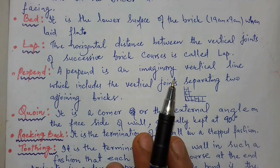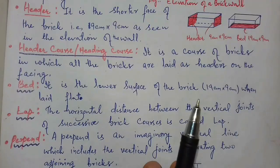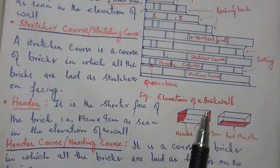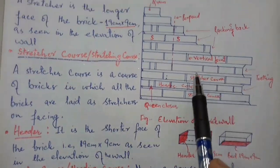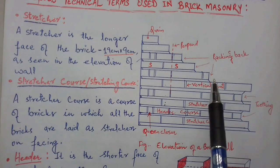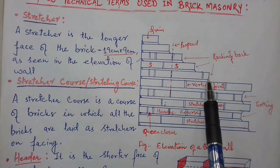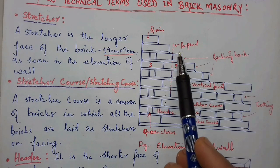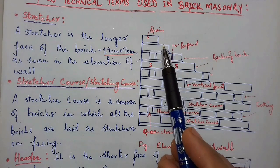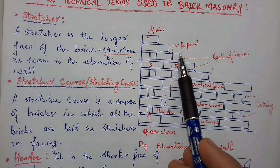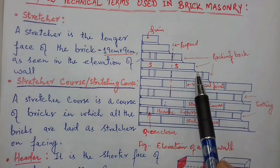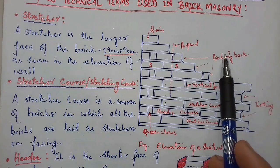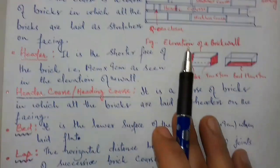Another term is raking back. It is the termination of a wall in a step position. As you can see, this termination of the wall goes into a step position — that step position is known as raking back.